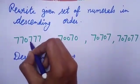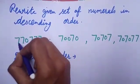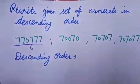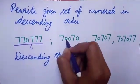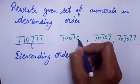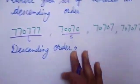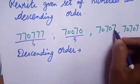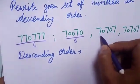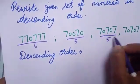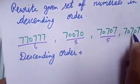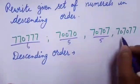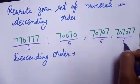The first numeral has 6 digits, the second numeral has 5 digits, the third numeral has 5 digits, and the fourth numeral has 6 digits.